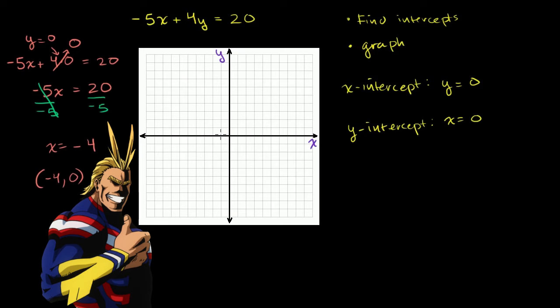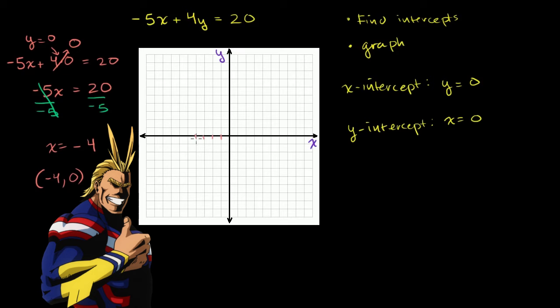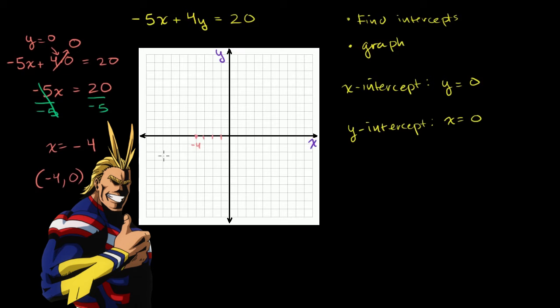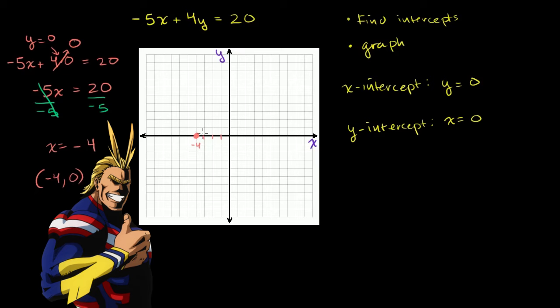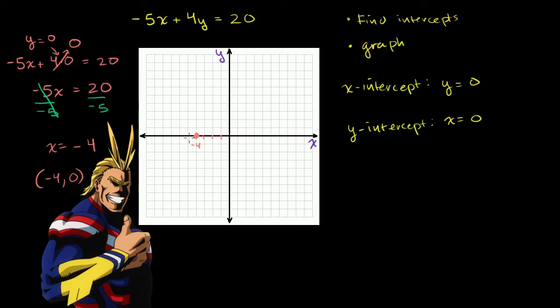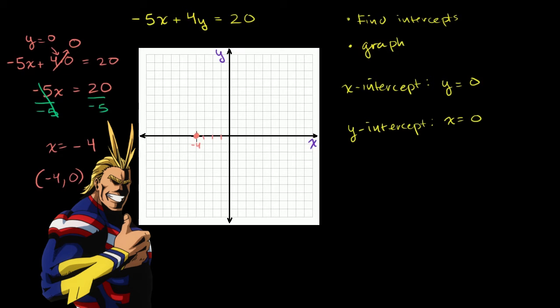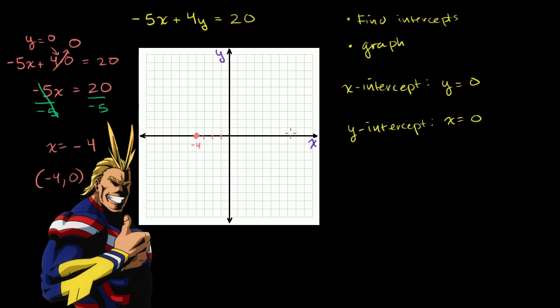So let me graph that. So if we go 1, 2, 3, 4, that's -4. And then the y value is just 0, so the point is right over there. That is the x-intercept. y is 0, x is -4. Notice we're intersecting the x-axis.